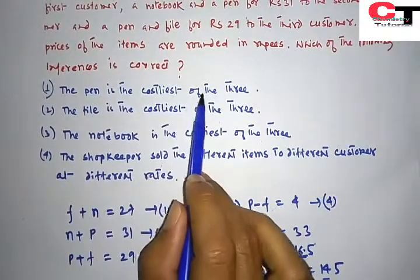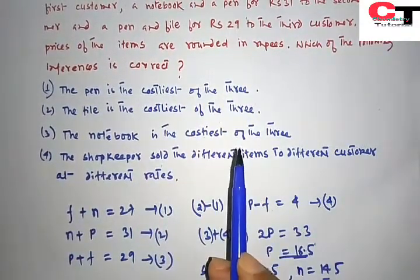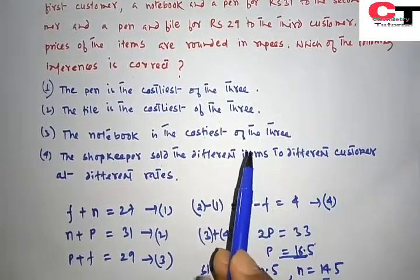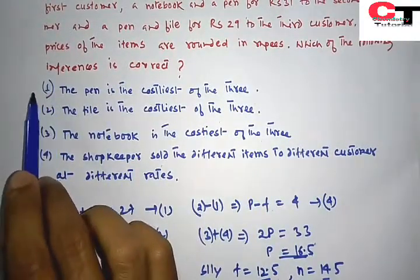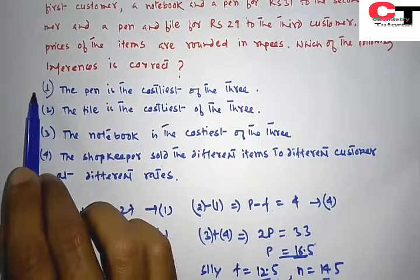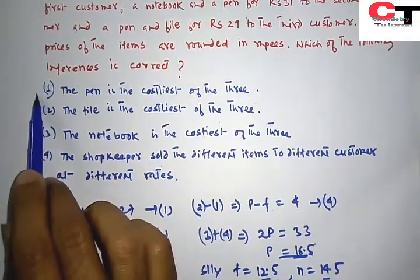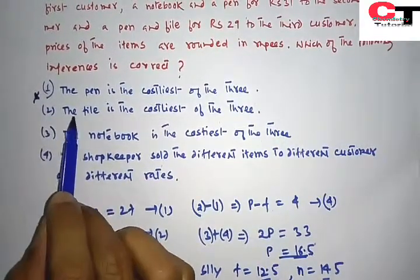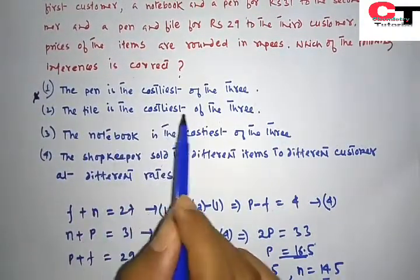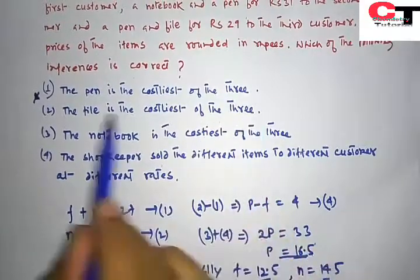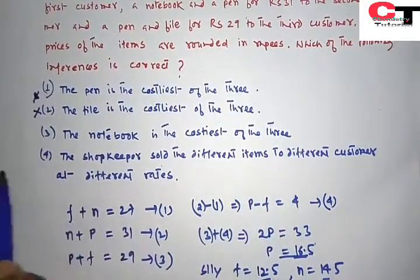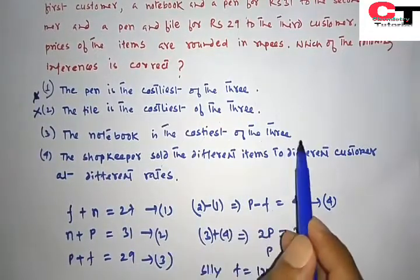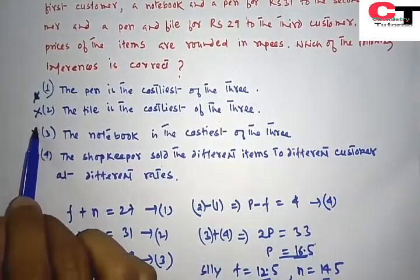The pen is the costliest of the three. Since the prices of the items cannot be predicted, we cannot make any statement about the cost of the items. So this inference will be wrong. Second, the file is the costliest of the three. Similar case will happen for this also. The notebook is the costliest of the three. This cannot be predicted either.